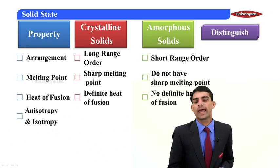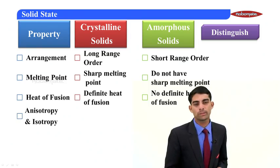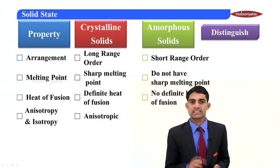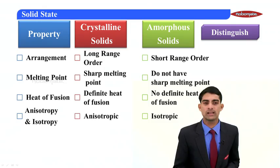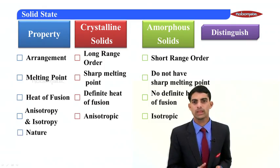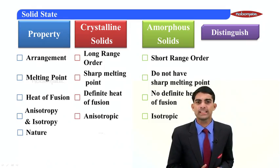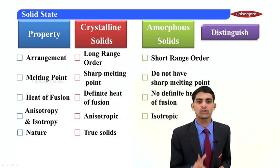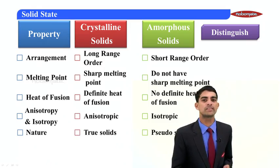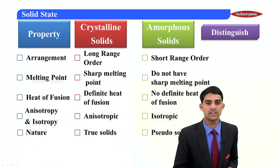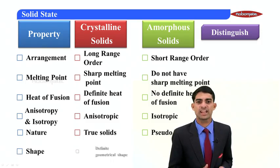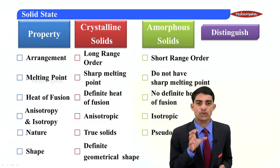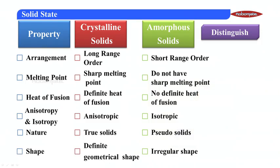The fourth point is anisotropy and isotropic nature: crystalline solids are anisotropic in nature, and amorphous solids are isotropic in nature. The fifth point is nature: crystalline solids are also known as true solids, while amorphous solids are also known as pseudosolids. The last point is shape: crystalline solids have a definite geometrical shape, but amorphous solids have an irregular shape.